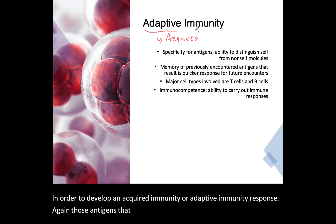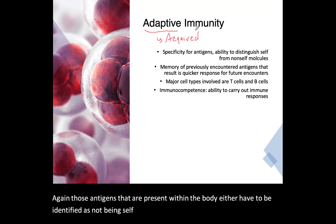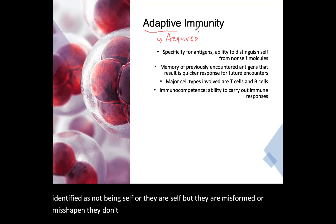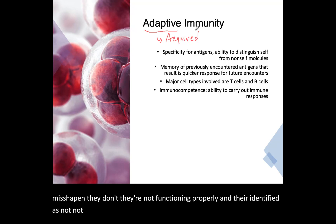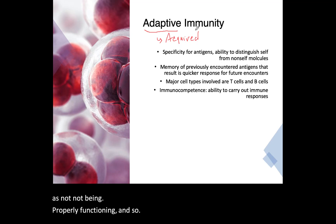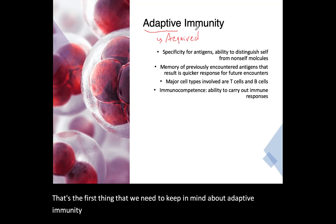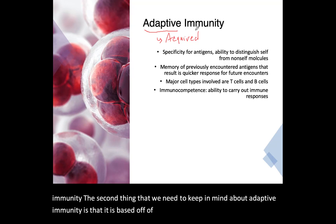The two criteria to develop an acquired or adaptive immunity response are: antigens present within the body must be identified as not being self, or they are self but misformed or misshapen and not functioning properly. That's the first thing we need to keep in mind about adaptive immunity.